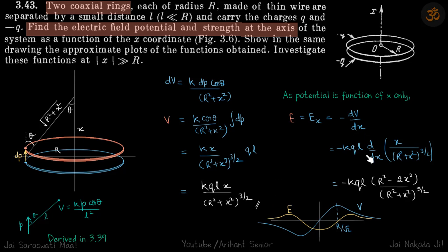If we do minus dV by dx, we get our field which comes to be this. Now if we plot this, we can interestingly see that this equation for potential is similar to that of an electric field due to a ring.